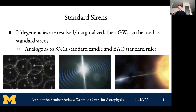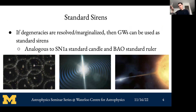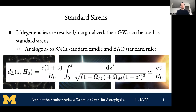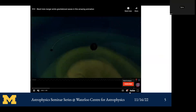We want to probe this by using gravitational waves as a standard siren. You're probably familiar with BAO as a standard ruler or Type Ia supernovae as standard candles. We call them sirens because the detection chirps up in frequency. The general idea is to get luminosity distance from LIGO-Virgo-KAGRA and add redshift information — if we can break the degeneracy between distance and redshift, we can measure the Hubble constant.